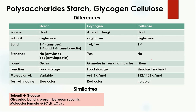Along with the differences, there are similarities among these three polysaccharides. First, the subunit is glucose — whether alpha or beta glucose. A glycosidic bond is present between the subunits; when two glucose molecules combine, the bond formed is called a glycosidic bond, and this bond is found in all three polysaccharides. The molecular formula for these polysaccharides is C6H10O5 repeated n times.